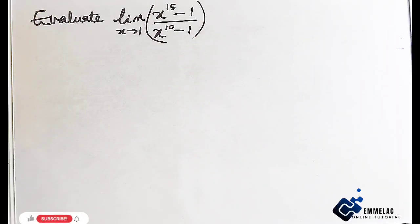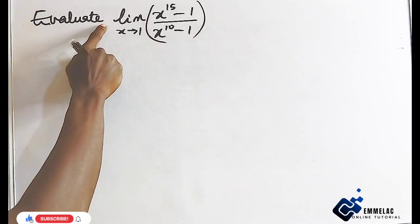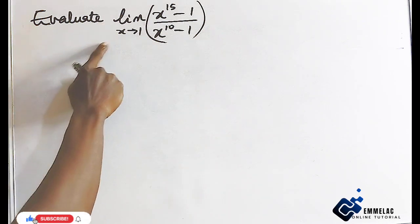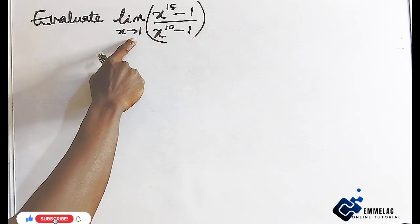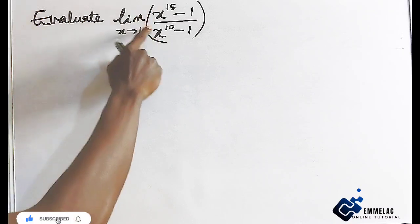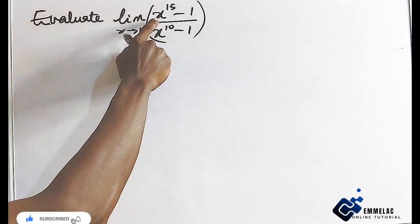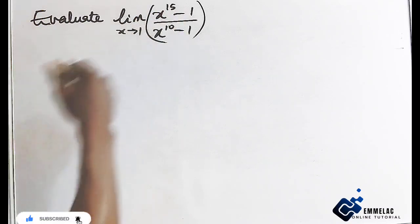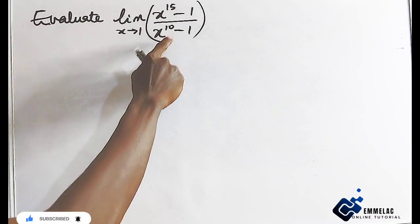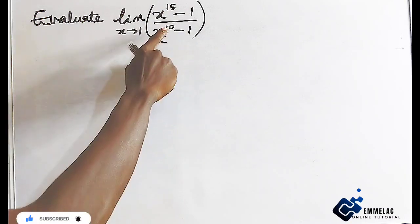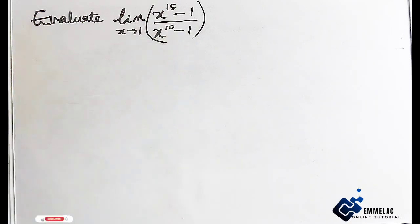Let us consider this question: we have the limit of x as it approaches 1, where you have x raised to the power of 15 minus 1, all over x raised to the power of 10 minus 1.